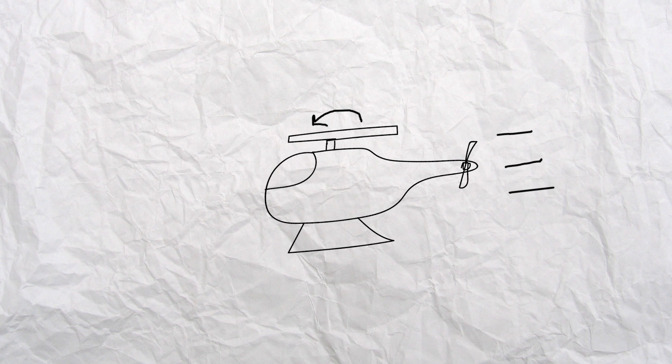In normal helicopter flight, the engine spins the rotor through the air, and air is drawn in from above and thrusted downwards, creating lift.